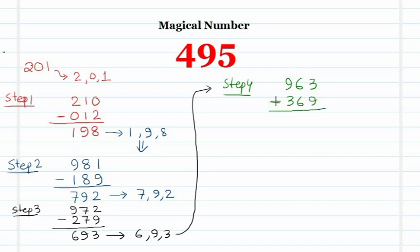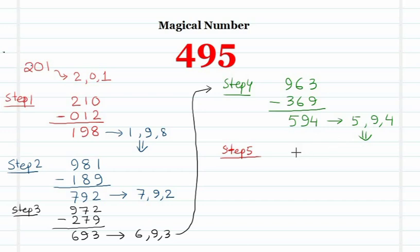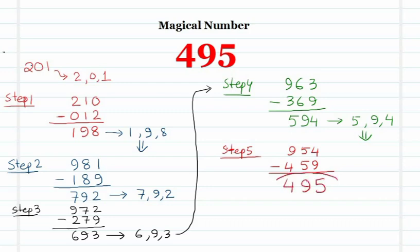The smallest number from 963's digits is 369. Subtract: we get 594. The digits of 594 are 5, 9, and 4. Finally, form the largest number: 954. The smallest: 459. Subtract: we get 495. Once again we reach 495.